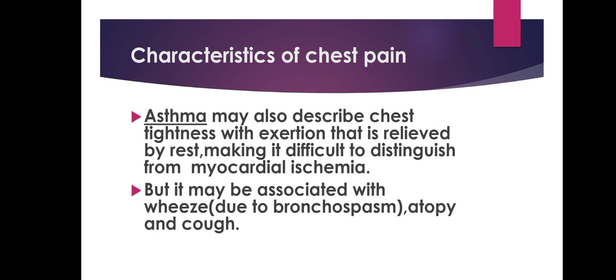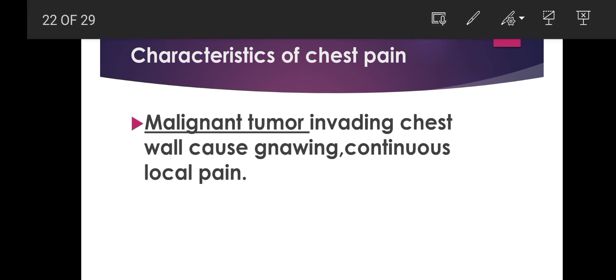Asthma is also described as chest tightness with exertion relieved by rest, making it difficult to distinguish from myocardial ischemia, but asthma will be associated with wheeze due to bronchospasm, atopy, and cough. Malignant tumors invading the chest wall cause gnawing, continuous, and localized pain.